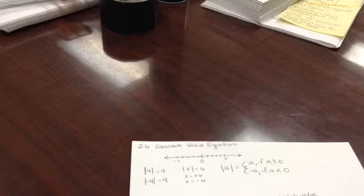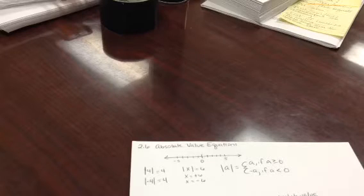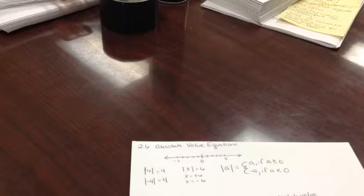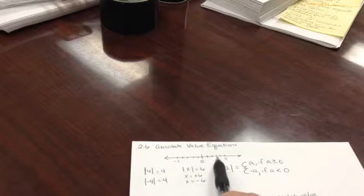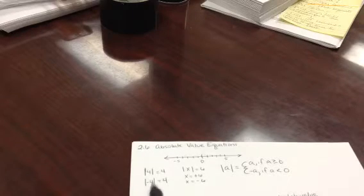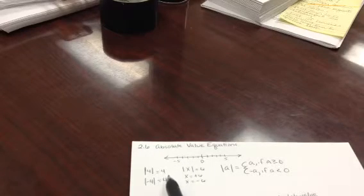We have a section on absolute value equations. When you take the absolute value of something, you're asking how many steps away from zero you are — the actual number of steps, not the direction. For the first problem: how many steps away from zero is four? It's four steps away. And negative four is also four steps away from zero.